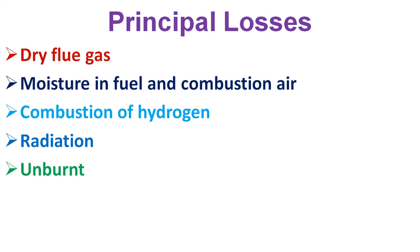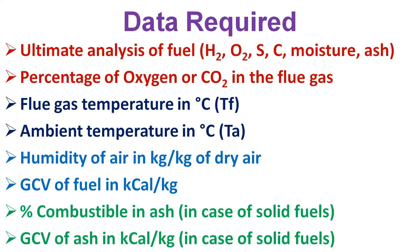The data required for calculating boiler efficiency using the indirect method includes: ultimate analysis of fuel (hydrogen, oxygen, sulfur, carbon, moisture content, and ash content); percentage of oxygen or CO₂ in the flue gases; flue gas temperature; ambient temperature in °C; humidity of air in kg/kg of dry air; gross calorific value in kcal/kg; and percentage combustible in ash and GCV of ash in kcal/kg for solid fuels.